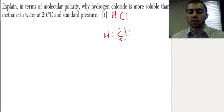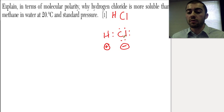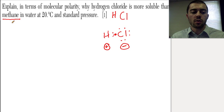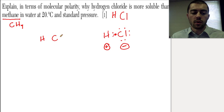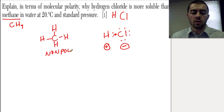If we look at methane, its formula is CH4. If we draw the Lewis structure for CH4, we have a symmetrical structure. So CH4 is going to be nonpolar, whereas HCl is very polar. Chlorine, being very electronegative, pulls electrons towards itself, making a negative end and a positive end. Methane's symmetry means there is no net dipole.